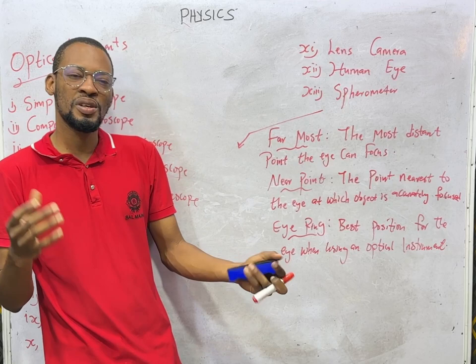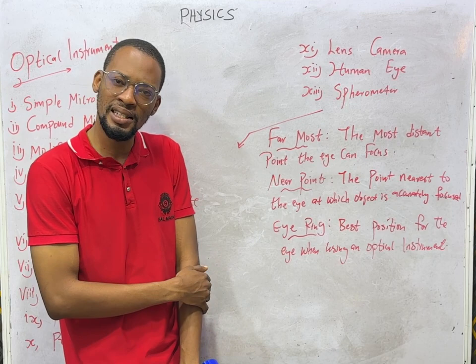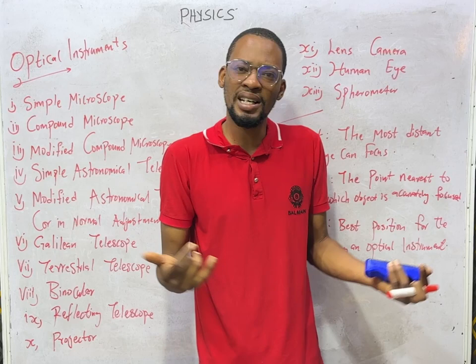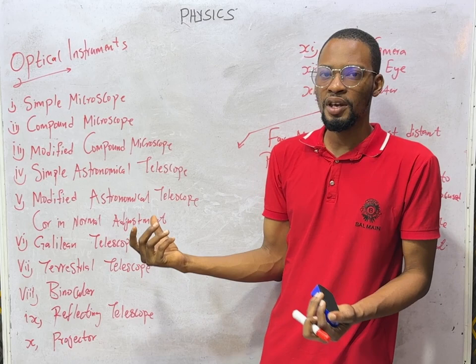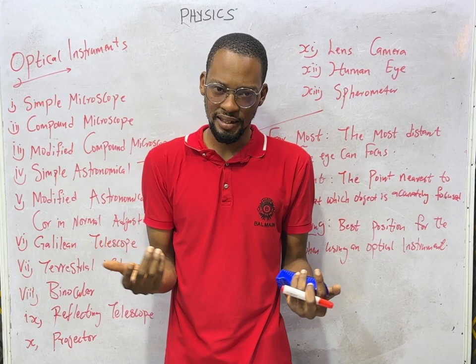Meanwhile, there are lights that are not visible to the eyes — you cannot see all these lights. Examples: ultraviolet lights, gamma rays, X-rays, microwaves — you cannot see all these lights. Infrared rays — so all these are not visible to the eyes.